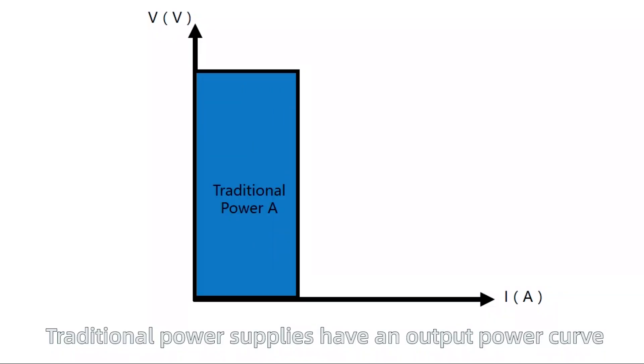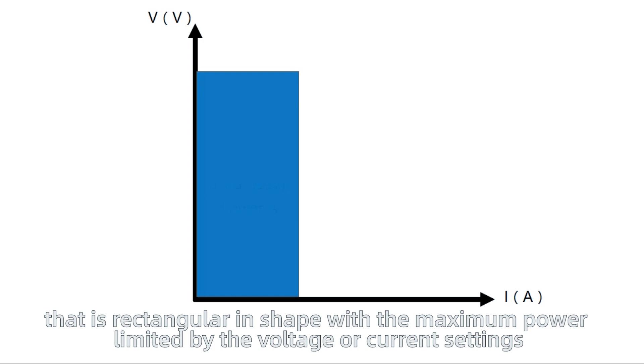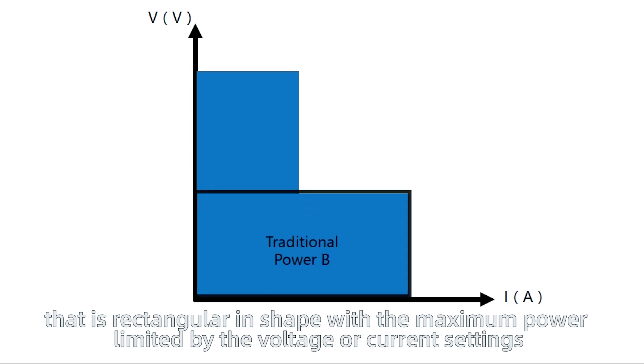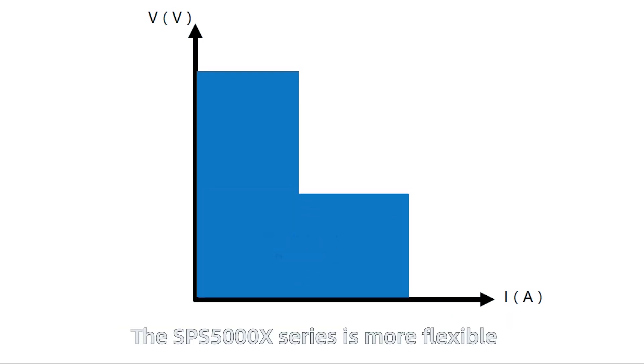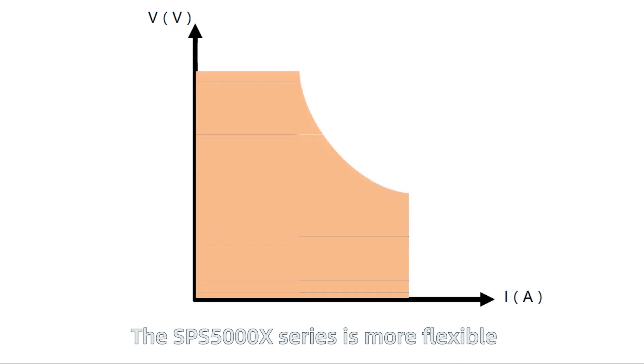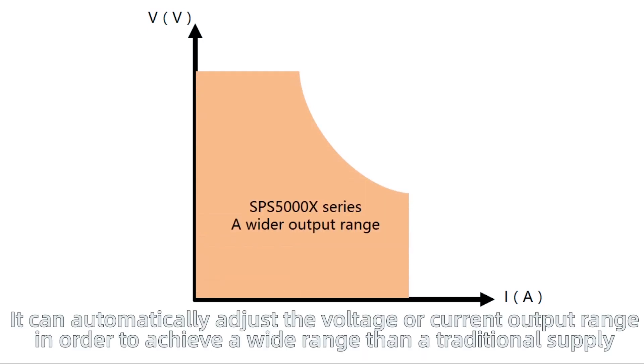Traditional power supplies have an output power curve that is rectangular in shape with the maximum power limited by the voltage or current settings. The SPS5000X Series is more flexible. It can automatically adjust the voltage and output current range in order to achieve a wider output than a traditional supply.